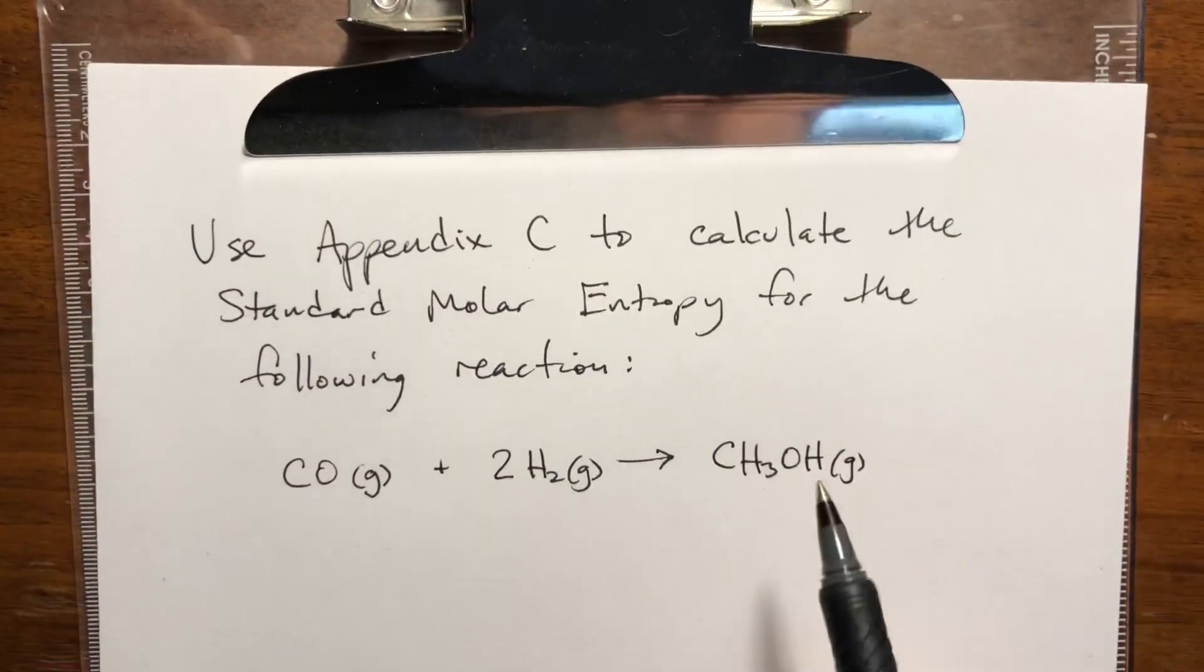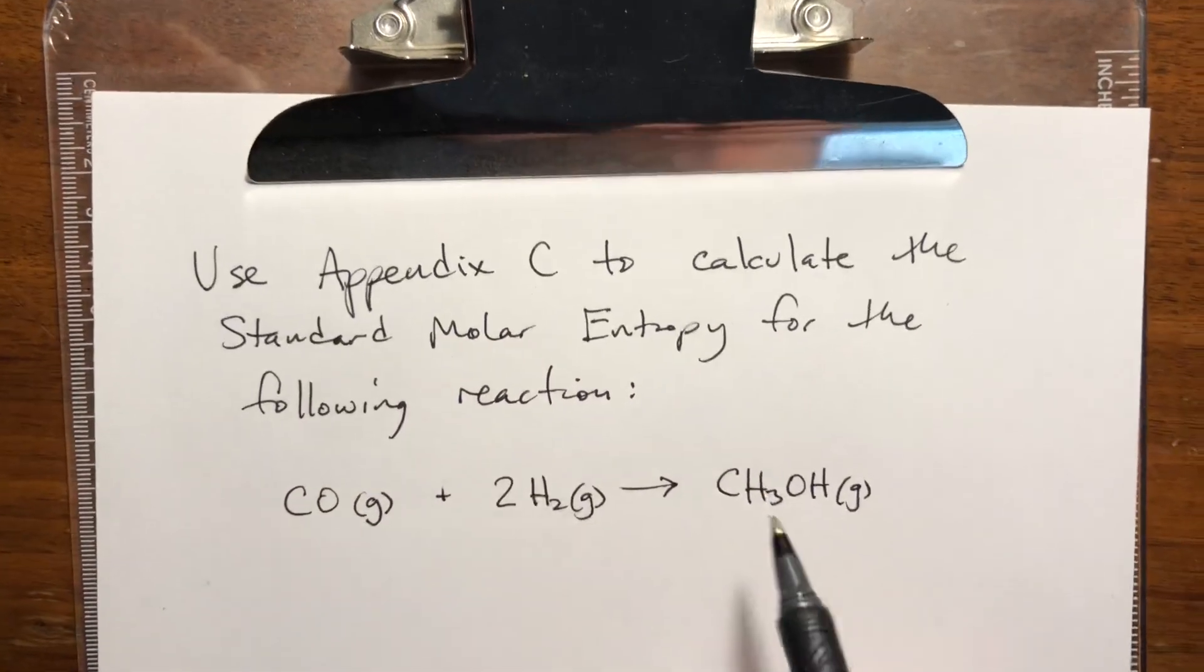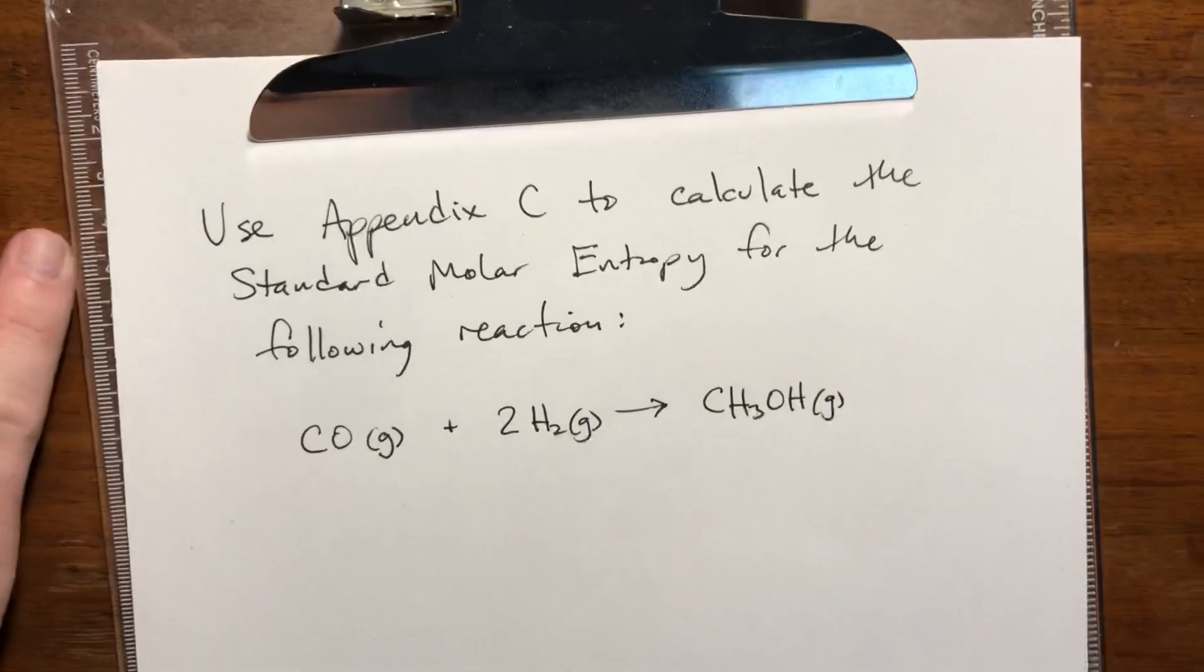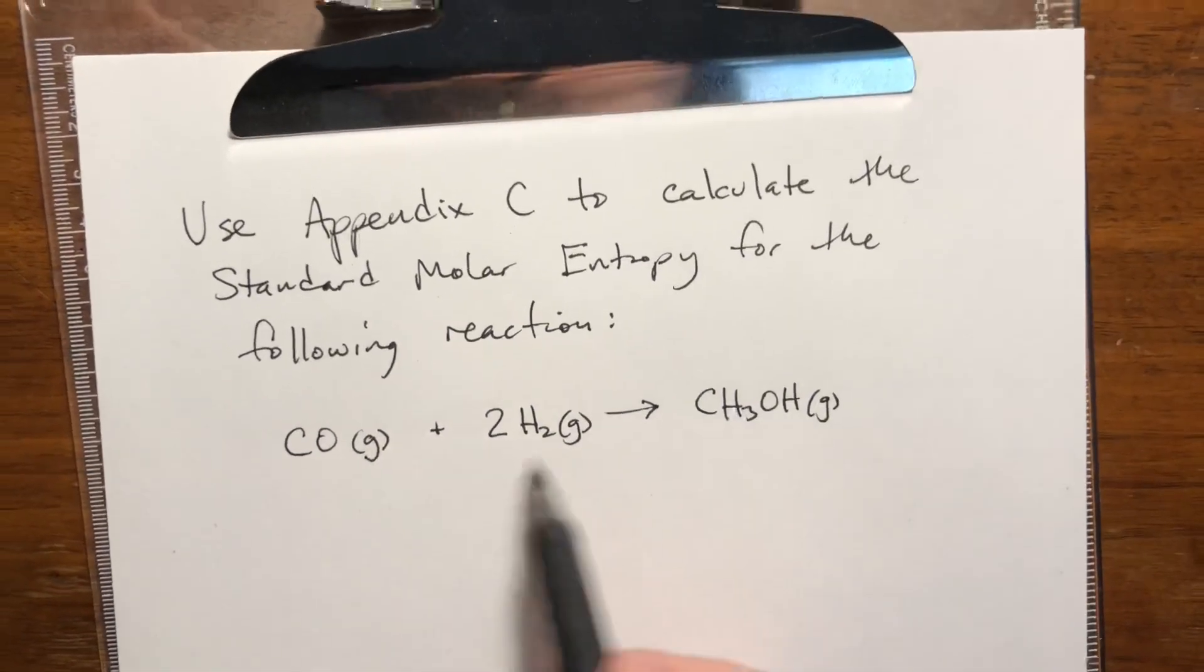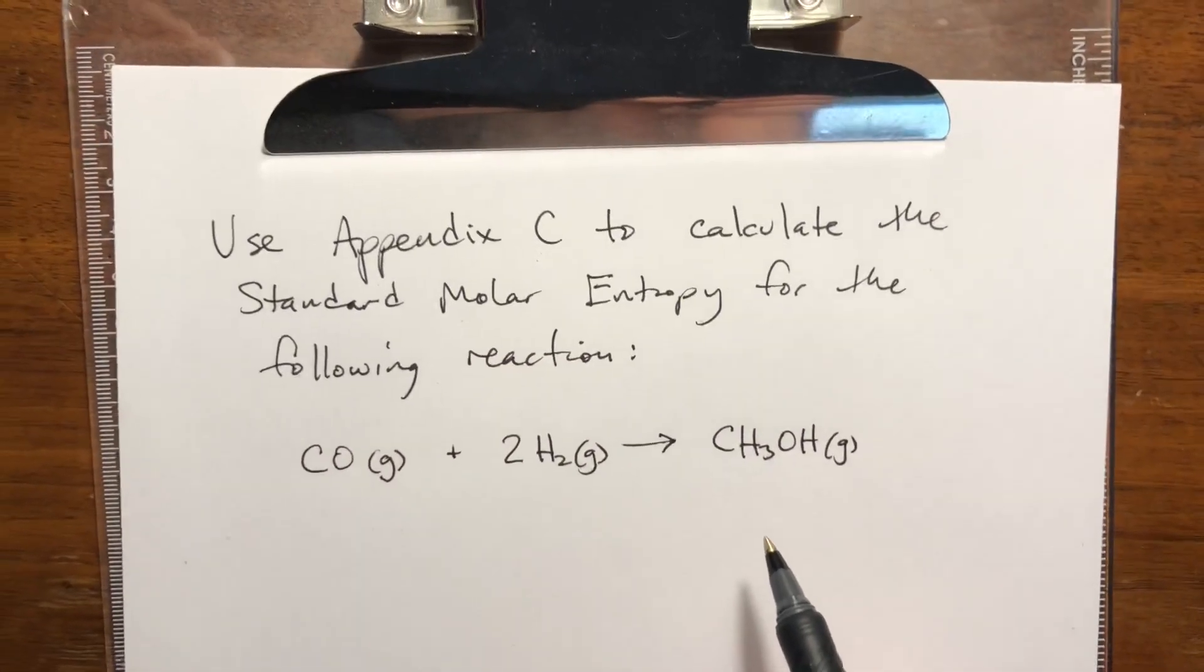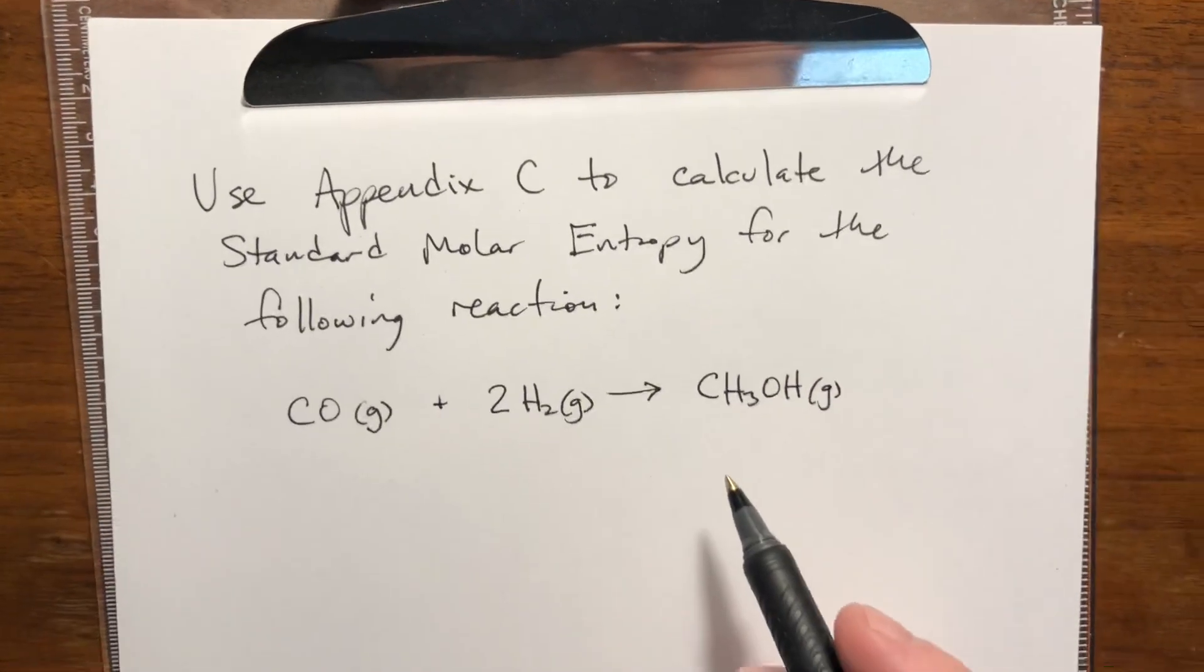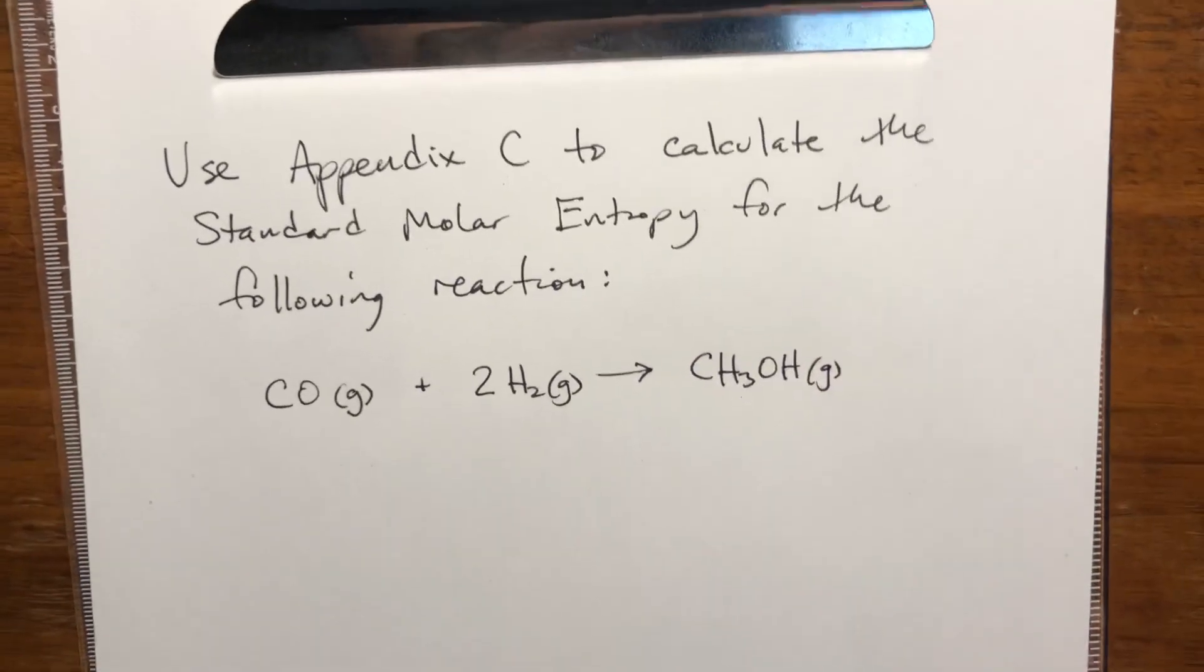We're going to use Appendix C to calculate the standard molar entropy of the following reaction. At a glance, we have three moles of gas going to one mole of gas, so we expect this to not be super spontaneous, which means possibly a negative ΔS, because positive entropy changes are more likely to be spontaneous.